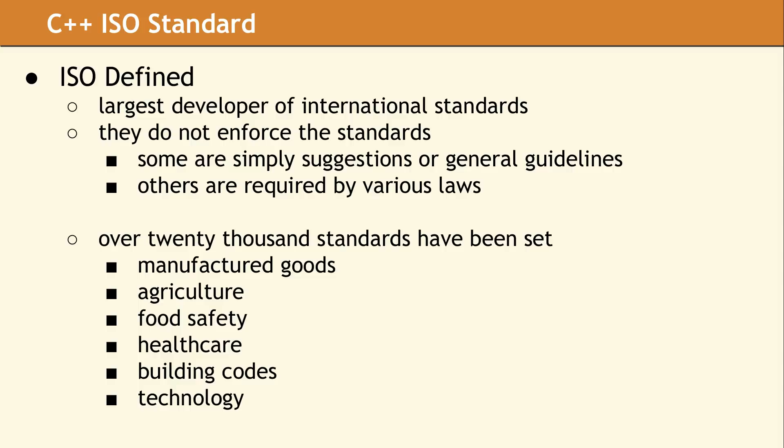ISO is the largest developer of international standards in the entire world. The role of ISO is only to produce international standards; it does not have any mechanism for enforcement. Some standards, like building codes, are enforced by local laws requiring conformance to an ISO standard. The standards produced by ISO span a wide range of subjects, with standards for manufactured goods covering things like standard heights for desks and office chairs.